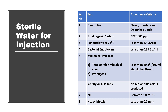All pathogens such as Escherichia coli and Staphylococcus aureus should be totally absent. For acidity/alkalinity, it should not release any red or blue color in the test. The pH should lie between 5 and 7, and the heavy metal concentration should always be less than 0.1 ppm.